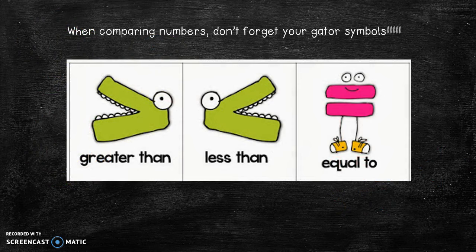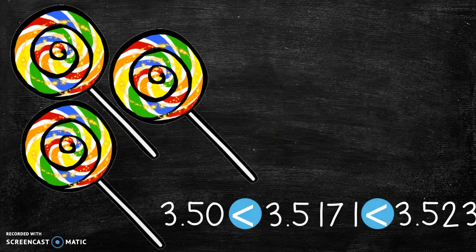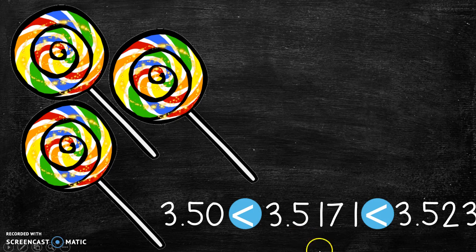Remember when comparing numbers don't forget to use those gator symbols that you learned way back in first grade. Remember the gator always eats, his mouth and his teeth always face the bigger number. So if it's facing this way it's going to be less than, and of course we have equal to. So here if we're going to compare our three lollipops we know that this number is less than this number which is less than this number.